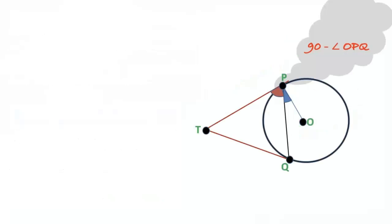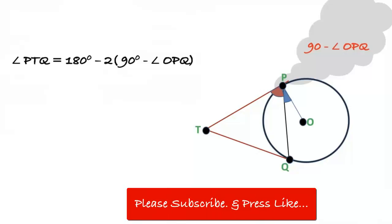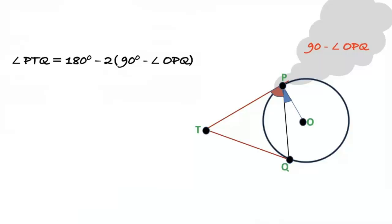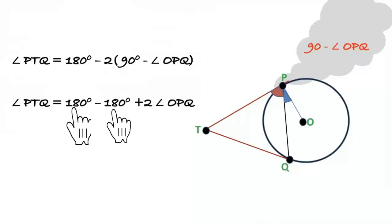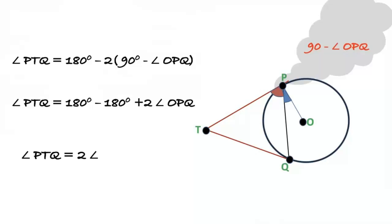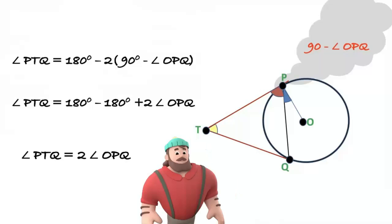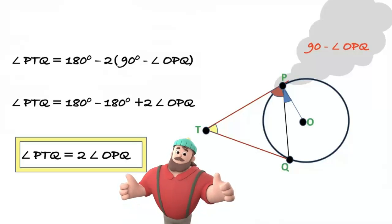Now substitute angle TPQ equals 90 minus angle OPQ into the earlier equation. Angle PTQ equals 180 minus 2 times (90 minus angle OPQ), which gives 180 minus 180 plus 2 angle OPQ. Therefore, angle PTQ equals 2 times angle OPQ. I hope it's clear. Thanks for watching — please subscribe and press the like button.